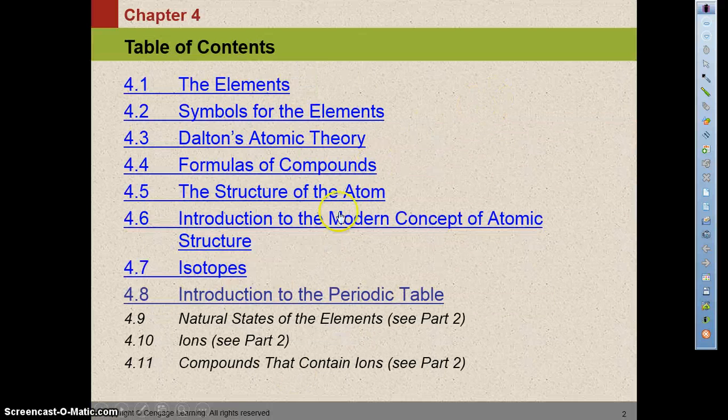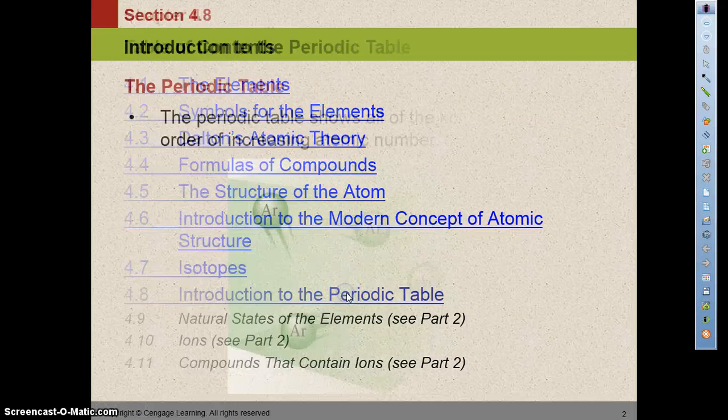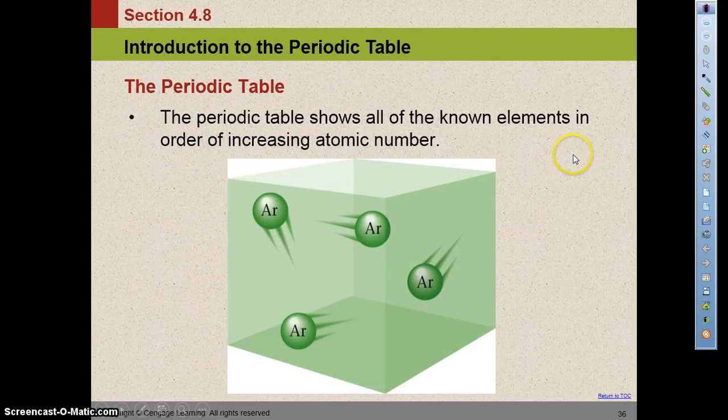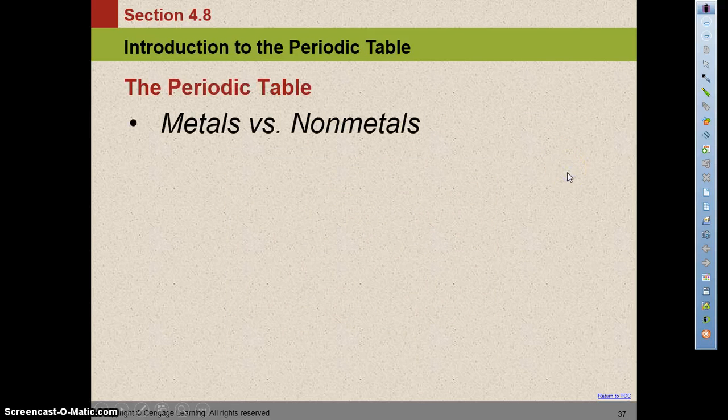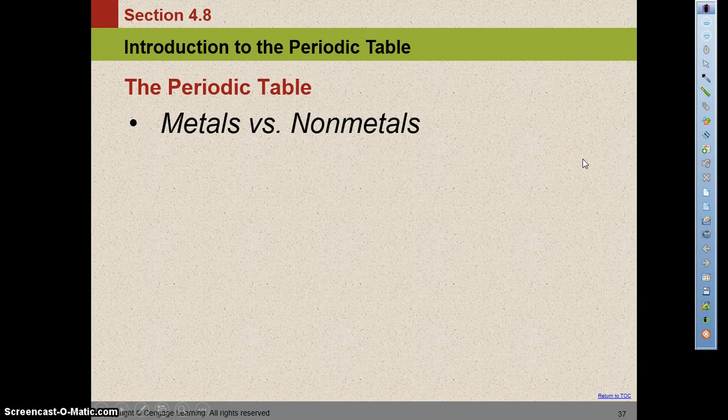Today we're going to be looking at section 4.8 and 4.9 in chapter 4. So 4.8 is going to talk about the periodic table. The periodic table shows all the known elements in order of increasing atomic number from left to right. We're going to learn what we call certain things on the periodic table and classify them.